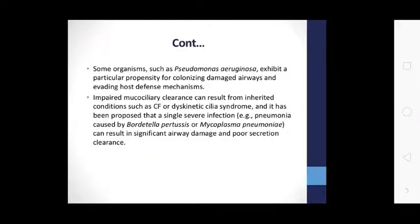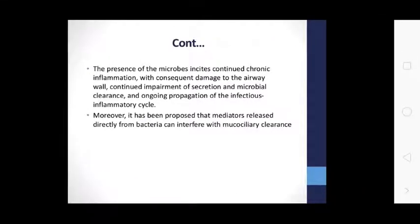Some organisms such as Pseudomonas aeruginosa exhibit a particular ability to evade host defense mechanisms and damage the airway. Impaired mucociliary clearance can result from inherited conditions such as CF and dyskinetic cilia syndrome. Severe infections — pneumonia caused by Bordetella pertussis or Mycoplasma pneumoniae — can result in airway damage and poor secretion clearance. Recurrent microbial infections continue chronic inflammation with consequent damage of the airway wall and continued impairment of secretion and microbial clearance.